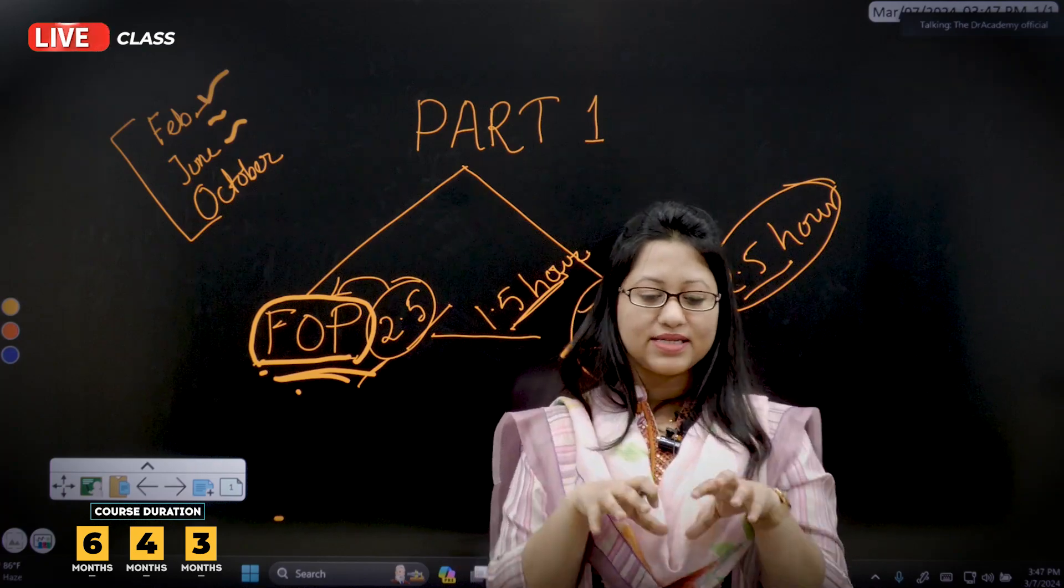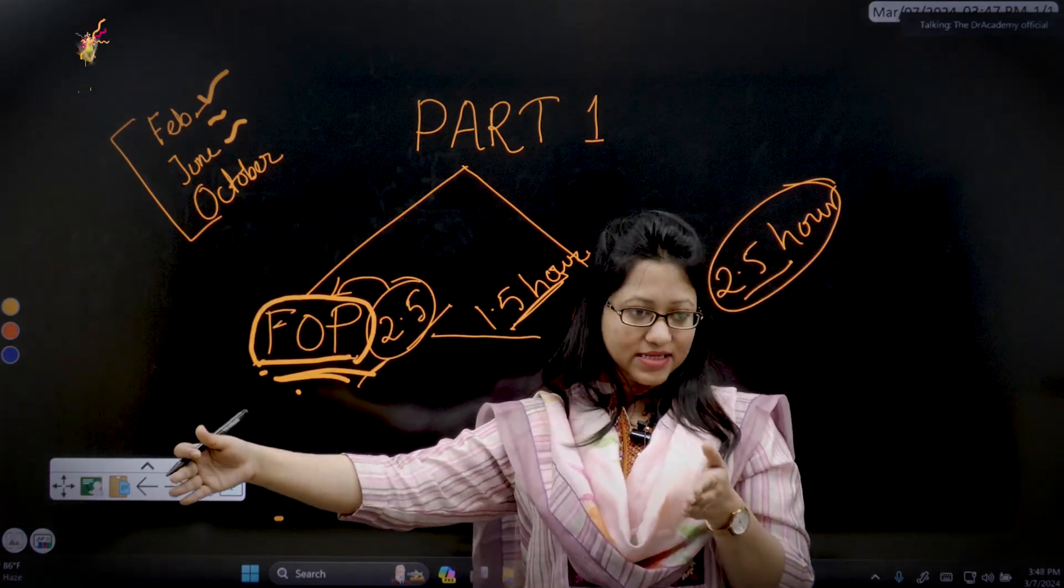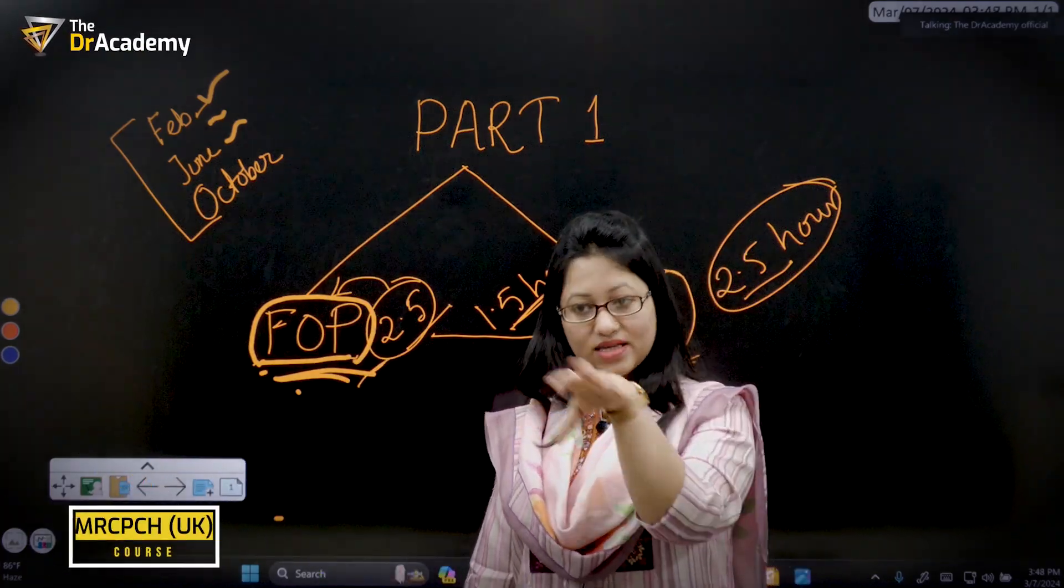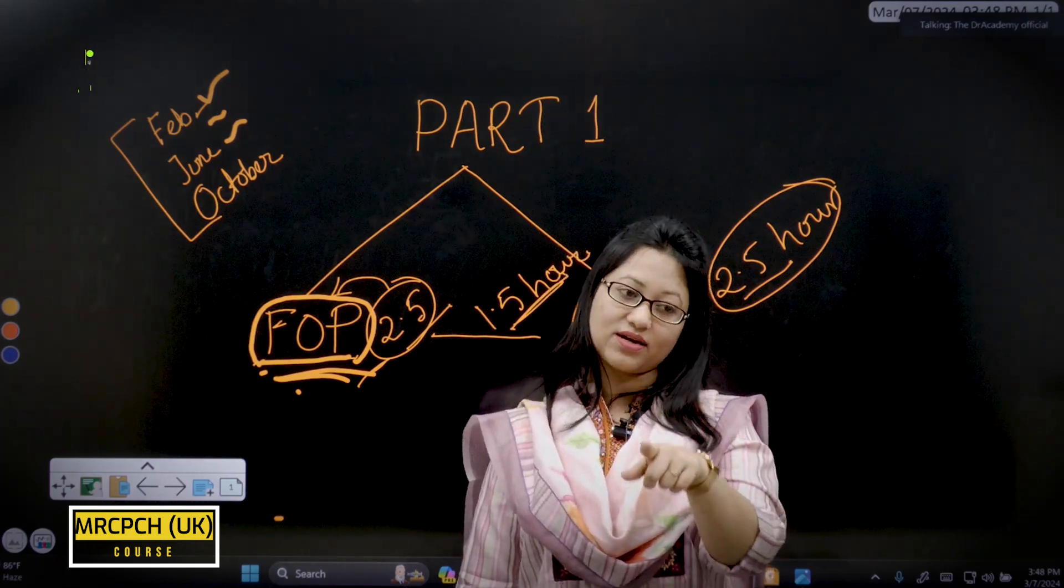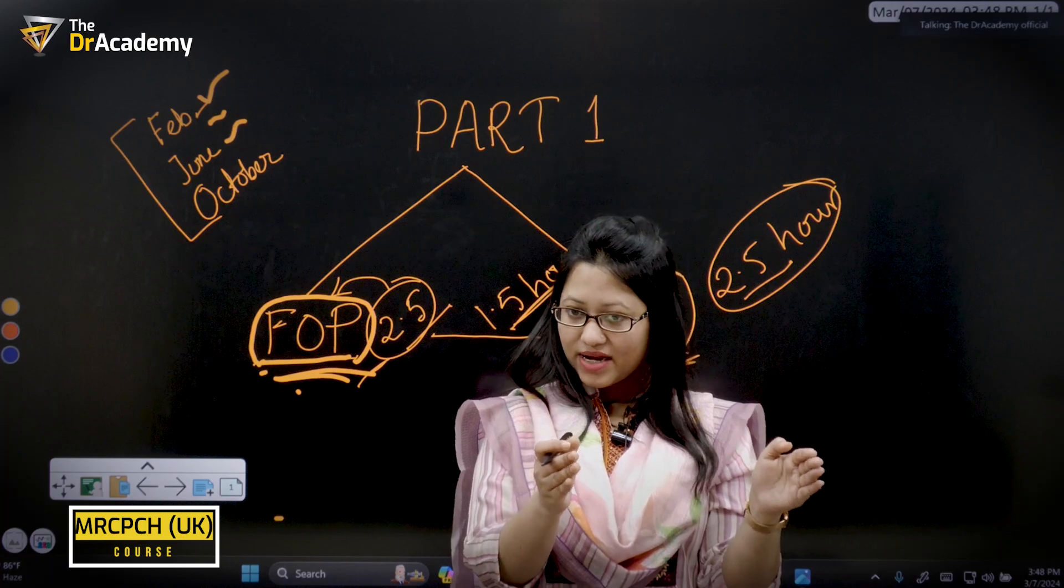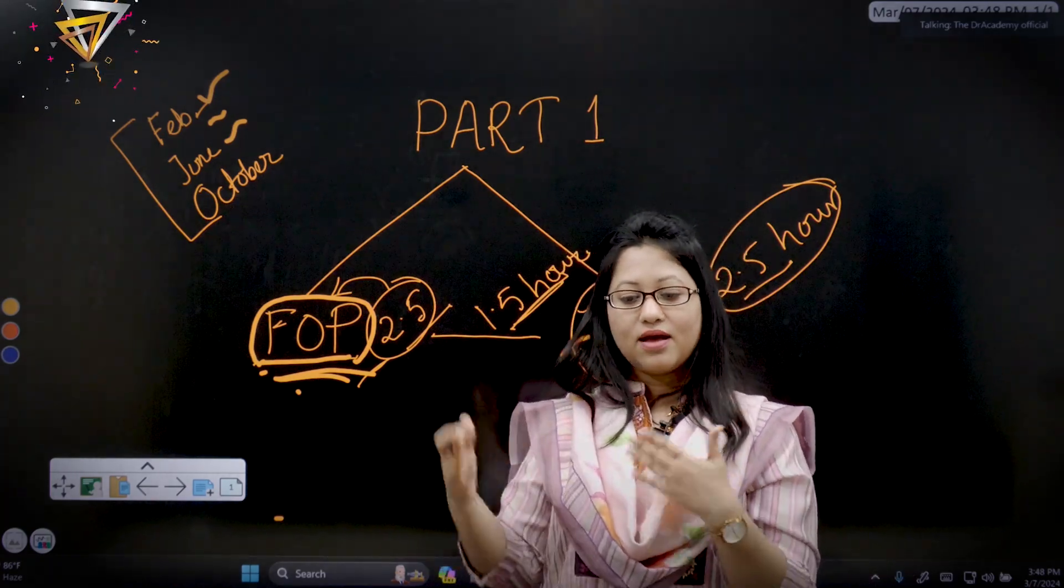Every week there's one class. For example, after today's endocrinology class, you'll get seven days to read before the next class. But those on four-month or three-month courses must do extra classes from our e-learning platform because their time is limited.